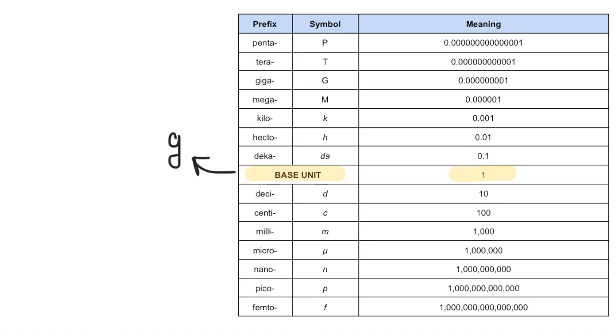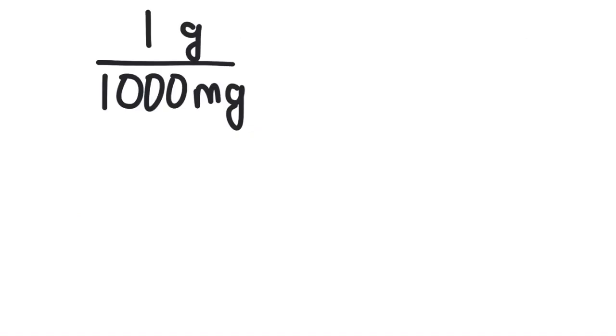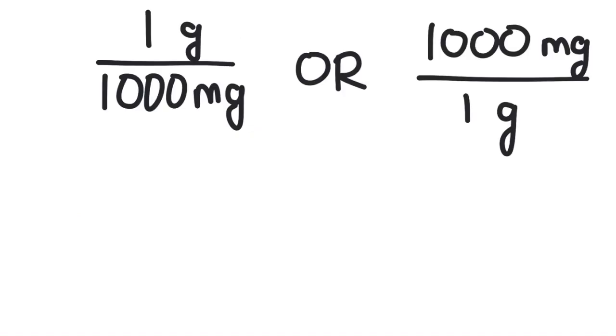Now I can find the prefix milli. Here it is. Milli is 1,000 of the base units. So the relationship is 1 gram to 1,000 milligrams, or I can say 1,000 milligrams to 1 gram. In dimensional analysis, we can write the relationship as a fraction. See how I can write it either way? It means the same thing no matter which way I write it.